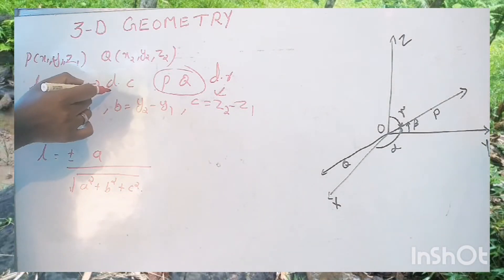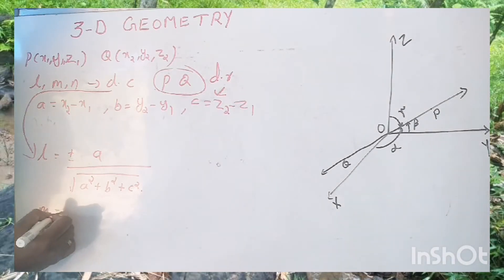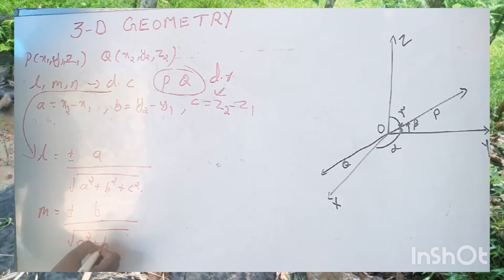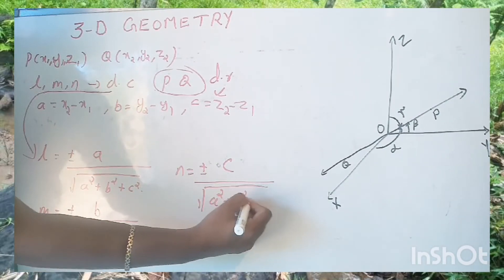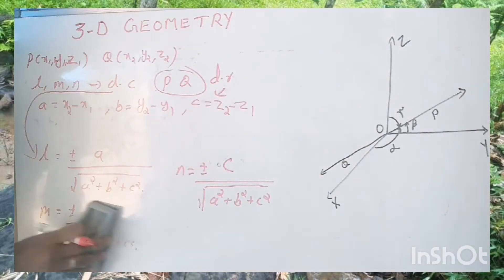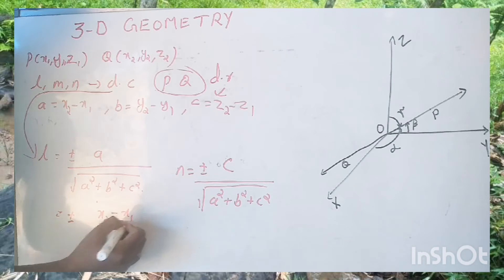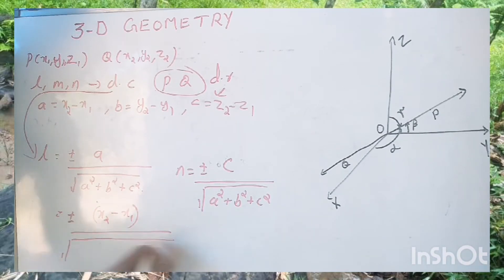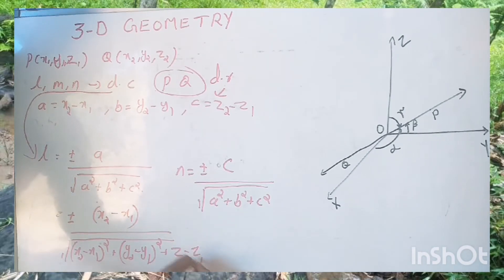If you want to find the direction cosines, using the formula L equals plus or minus A divided by the square root of A squared plus B squared plus C squared, and similarly for M and N — just put the values of A, B, C. Then L equals plus or minus (x2 minus x1) divided by the square root of (x2 minus x1)² plus (y2 minus y1)² plus (z2 minus z1)². This gives L when the coordinates of the points are given.